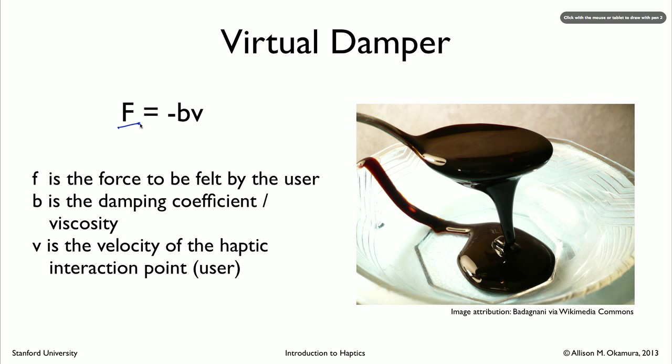There's just a force which is accomplished by multiplying a damping coefficient, b, times the measured velocity of the haptic device. Again, there is a negative sign which tells you that the force will always be opposing the direction of motion. So the goal of a damper is to represent a kind of viscous fluid, such as the molasses shown over here, so that the faster you try to move, the more the device slows you down.